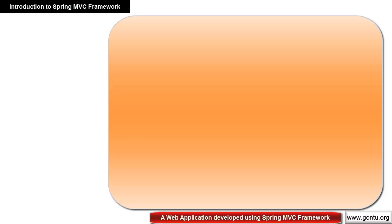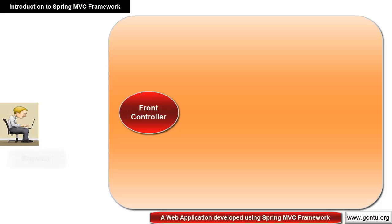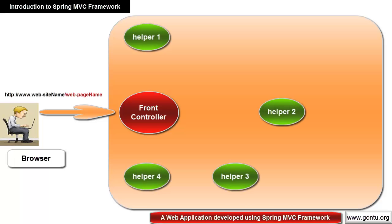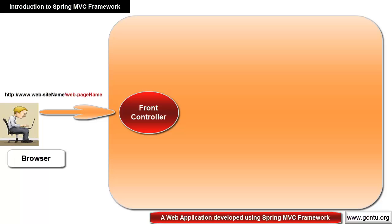Let's look at how an overall web application developed using Spring MVC framework works. In this application you would have something called a front controller. When an end user requests a web page by entering a URL in the browser and hitting enter, the request is received by this front controller. This is the main component that controls the complete application flow, and it has many helpers around it to get the work done. Each helper does a specific task and returns the result back to the front controller, whose job is to prepare and send the HTML response along with data back to the client's browser.